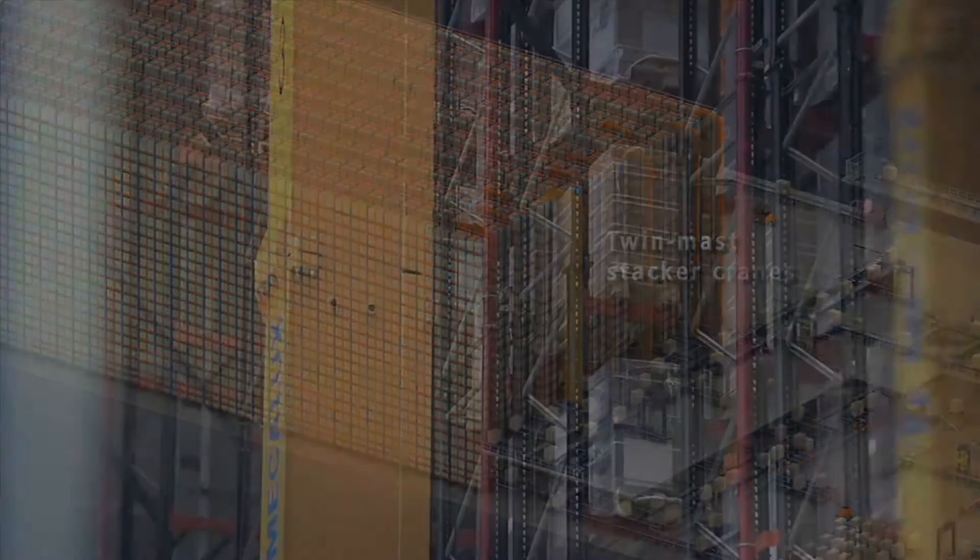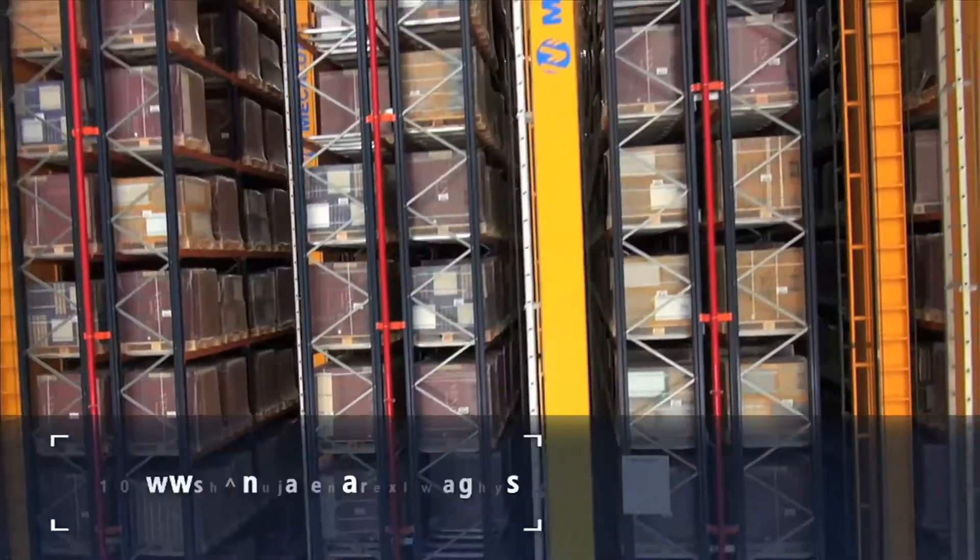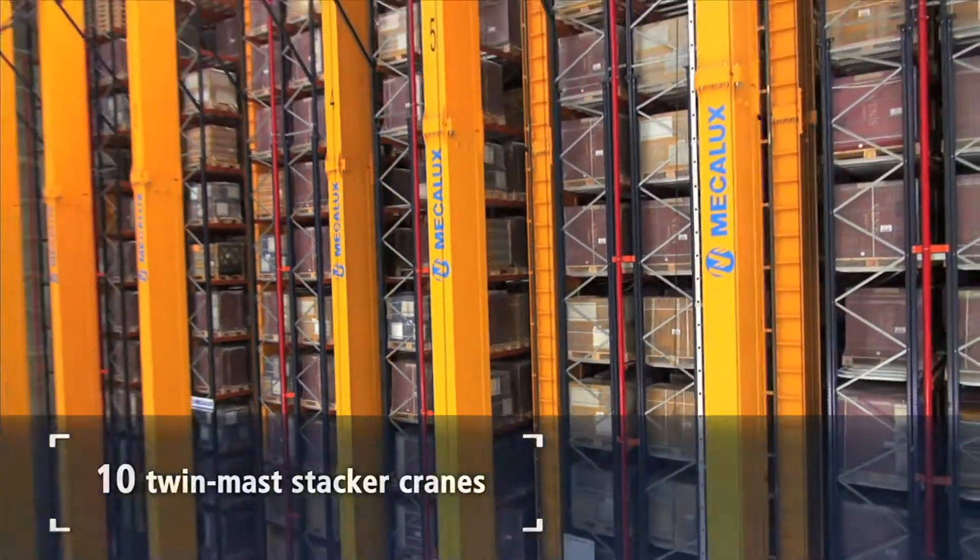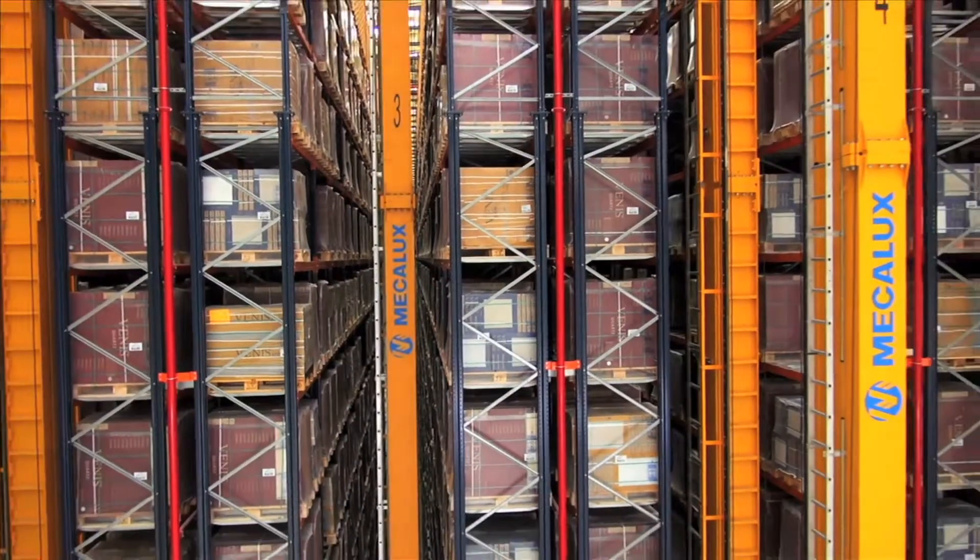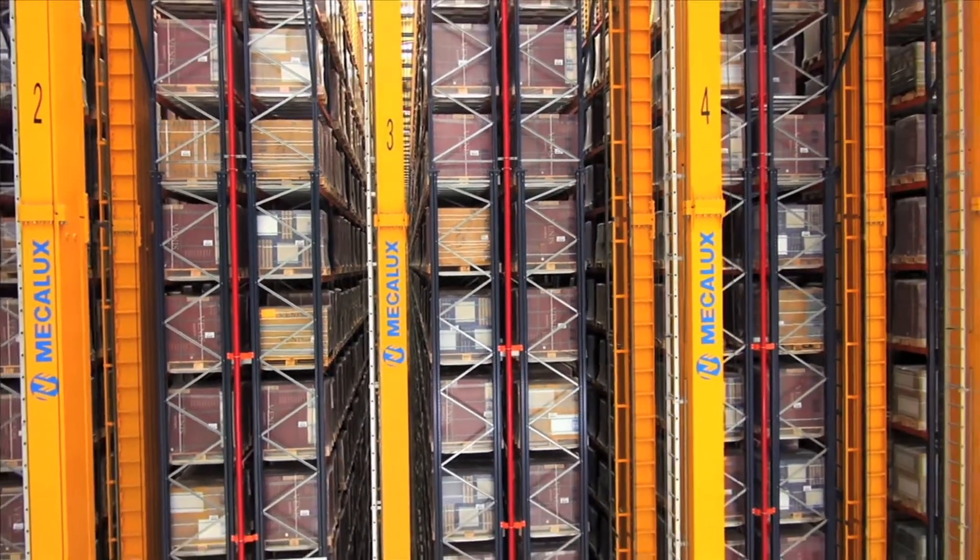The silo structure comprises 10 aisles, where 10 twin-mast stacker cranes circulate and lift the pallets to place them strategically following the orders of Mecalux's EZ Warehouse Management software.